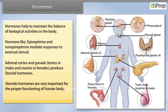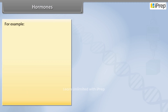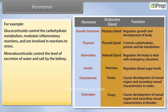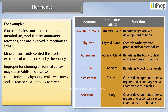Steroid hormones are very important for the proper functioning of the human body. For example, glucocorticoids control carbohydrate metabolism, modulate inflammatory reactions, and are involved in reactions to stress. Mineralocorticoids control the level of excretion of water and salt by the kidney. Improper functioning of the adrenal cortex may cause Addison's disease, characterized by hypoglycemia, weakness, and increased susceptibility to stress.